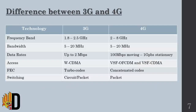Now you can see the difference between 3G and 4G. 3G has a 1.8 to 2.5 GHz frequency band and 4G has a 2 to 8 GHz frequency band, but their bandwidths are the same. The data rate for 3G is up to 2 Mbps, while 4G's data rate is up to 100 Mbps for moving users and 1 Gbps for stationary users.